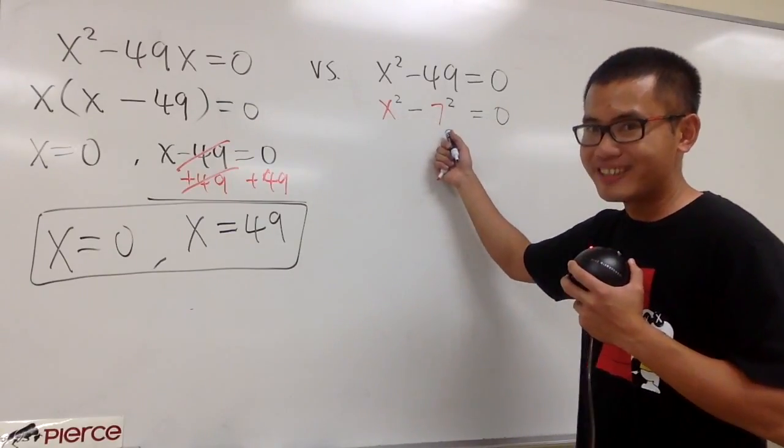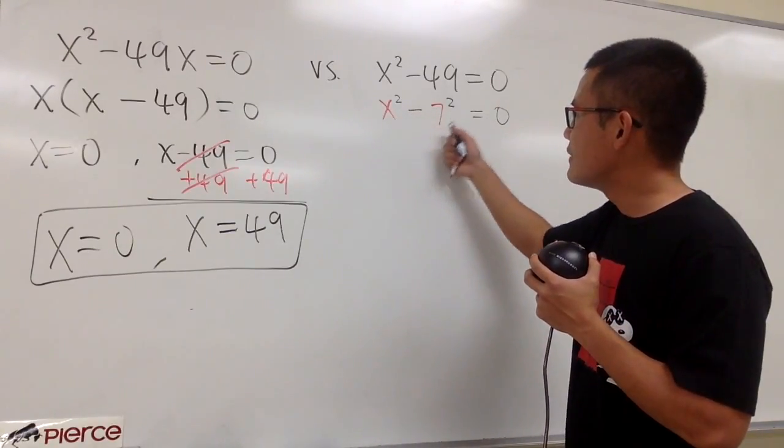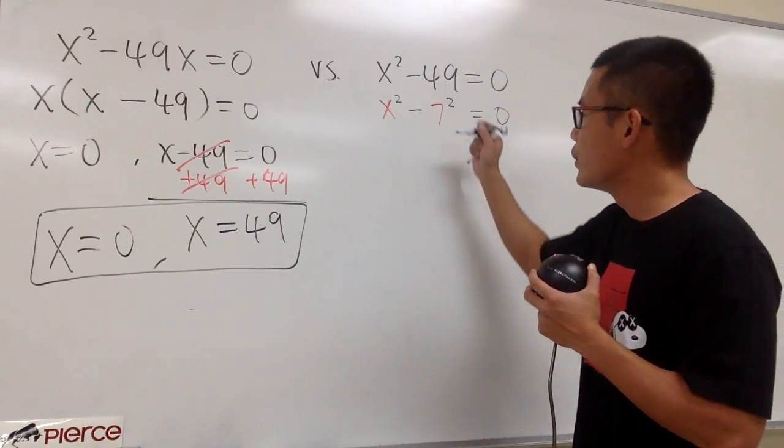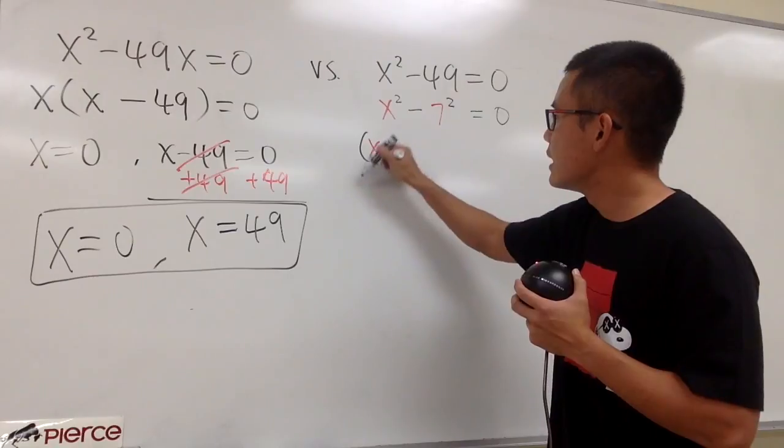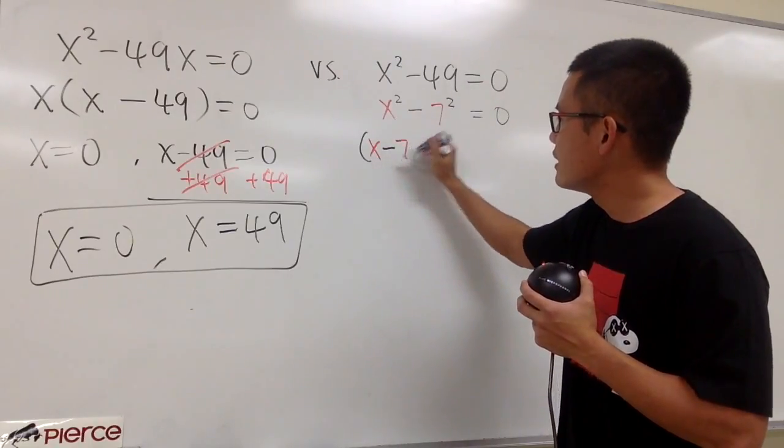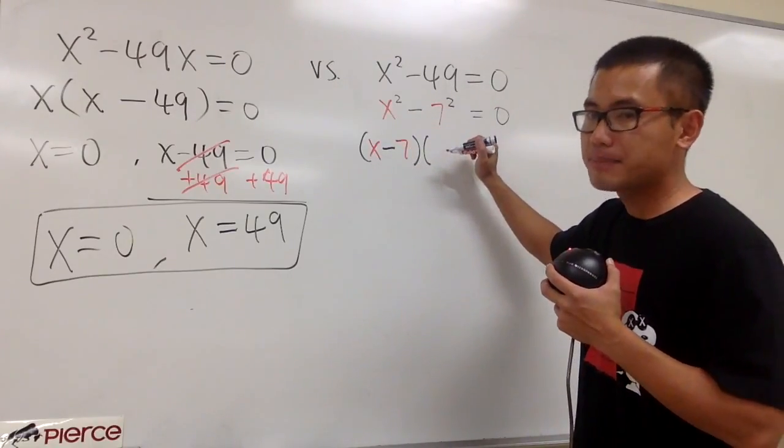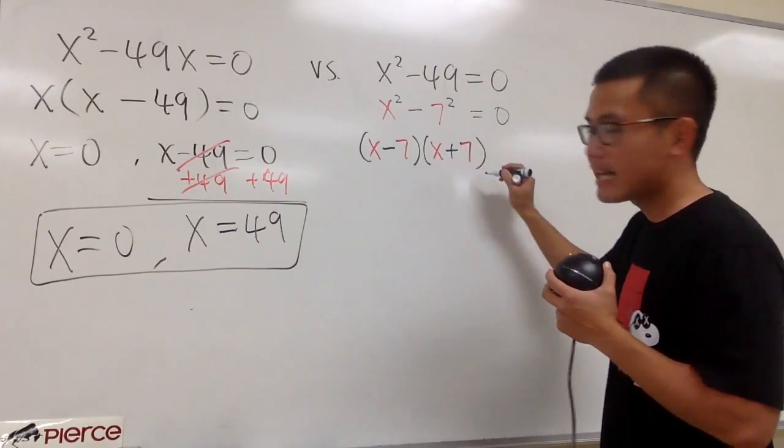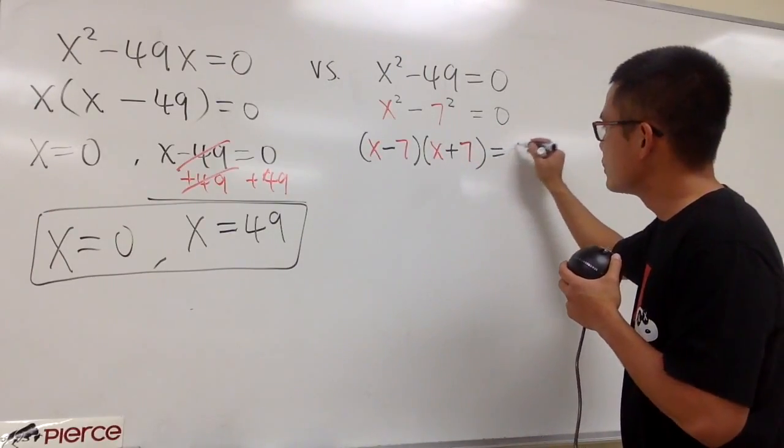And we will factor this out right here. x squared minus 7 squared. Use the formula for the difference of two squares. We will get x minus 7 times x plus 7. So, just like that. And we still set this equal to 0.